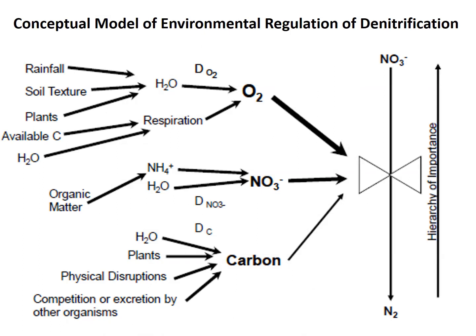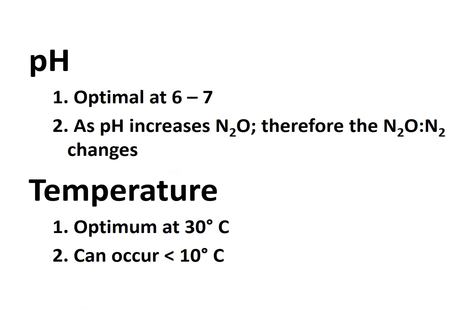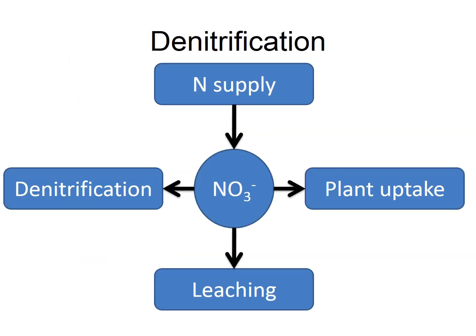Regarding pH regulation of denitrification, the optimum is between pH 6 and 7. As pH changes, the nitrogen forms including N₂O also change. The optimal temperature is in the mesophilic range, though some organisms can carry out denitrification below 10°C.